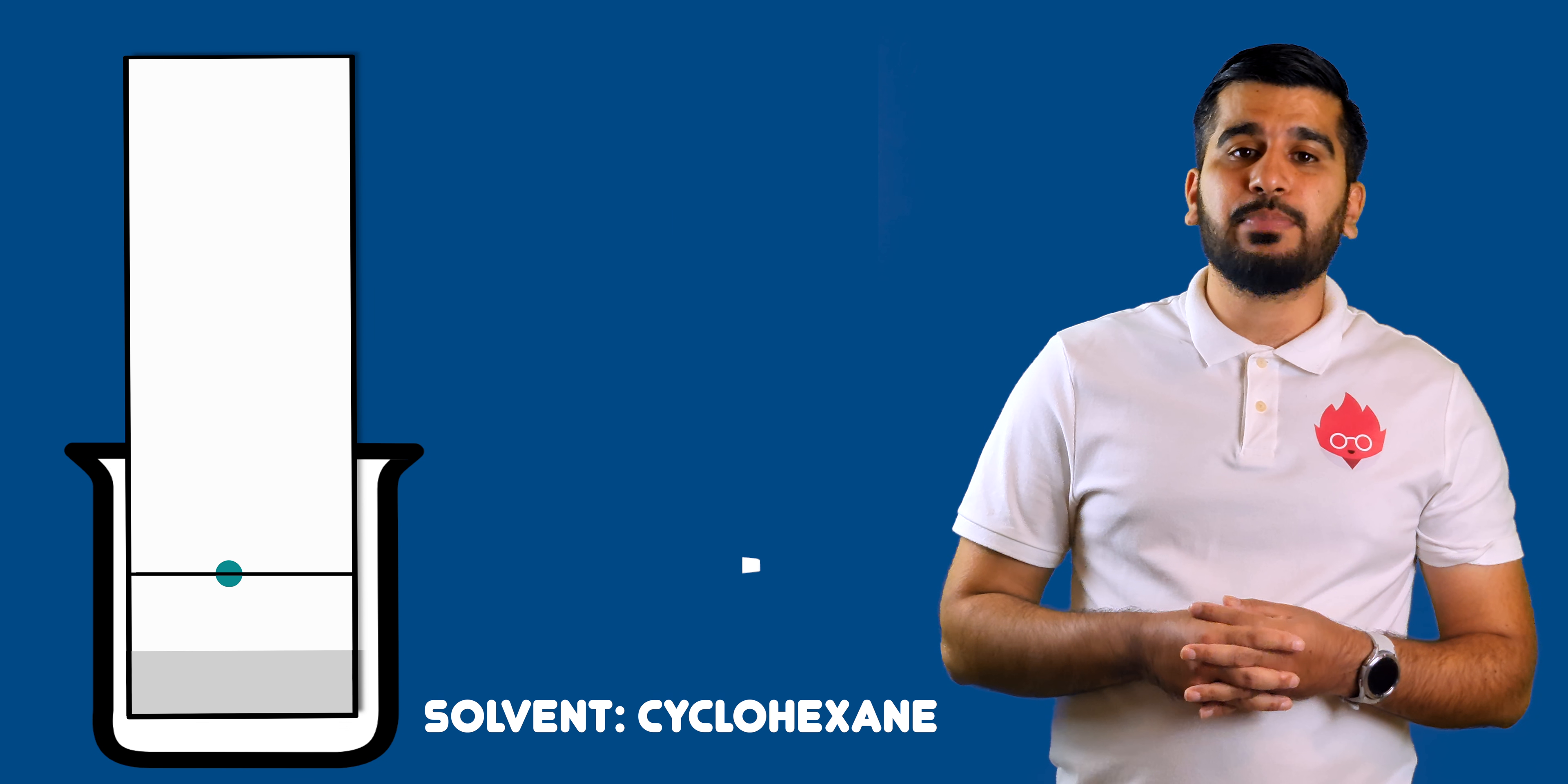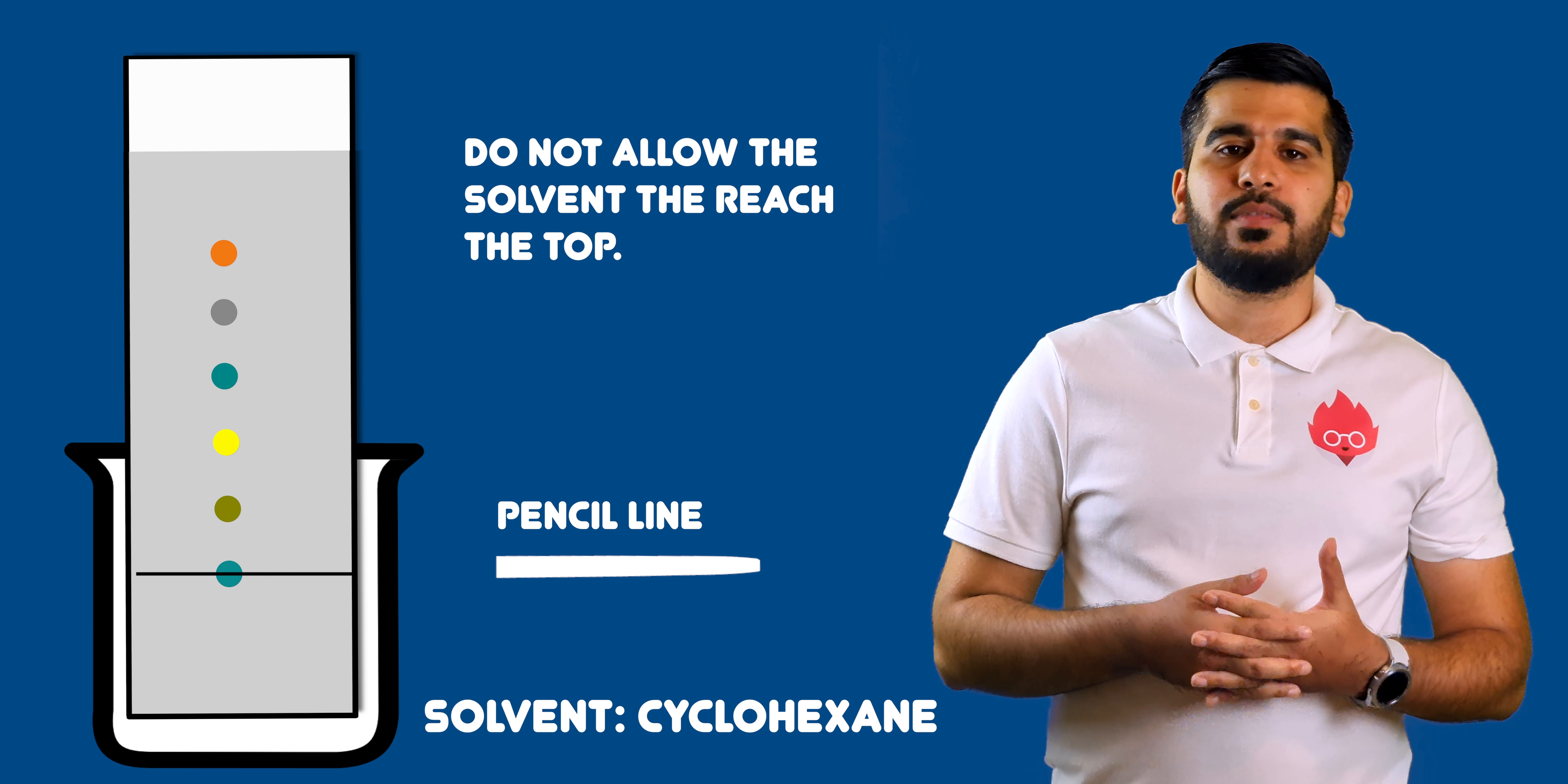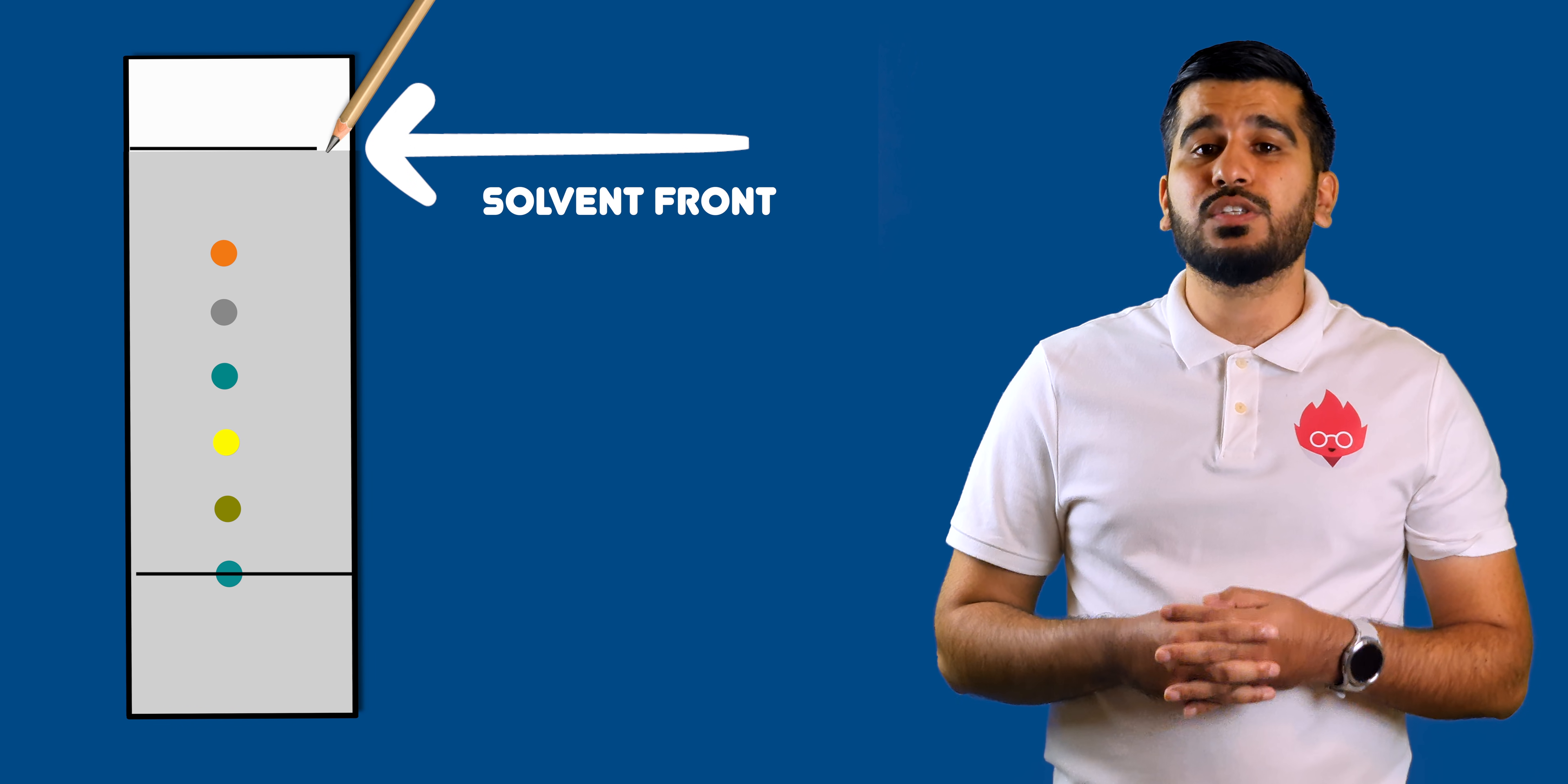The chromatography paper is placed into a solvent below the pencil line and left until the solvent has reached the top of the paper. The paper is removed from the solvent and a pencil line marking where the solvent moved up to is drawn. This is called the solvent front.